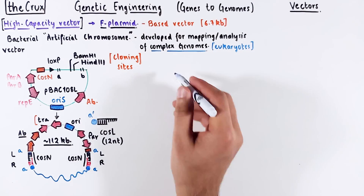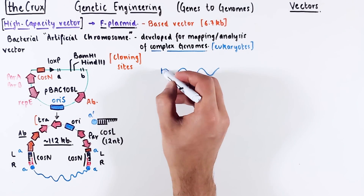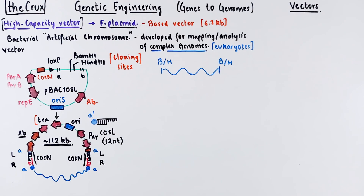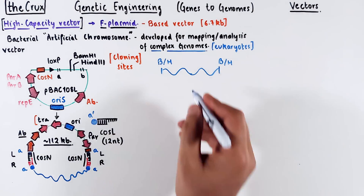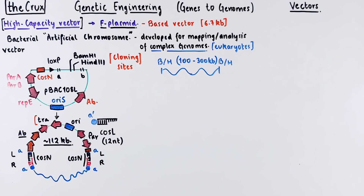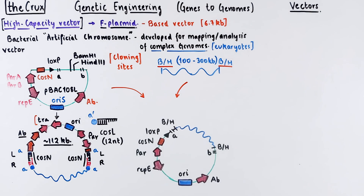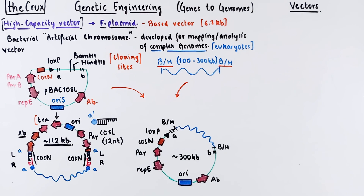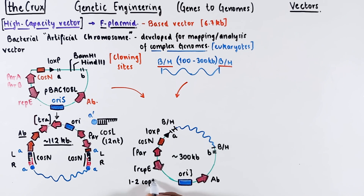The idea is similar to the mini-F plasmid. You take genomic fragments digested with BamHI or HindIII — these fragments could be as large as 300 KB. Depending on the restriction enzyme chosen, the vector is opened with that same enzyme, and you combine the two, resulting in a larger circular plasmid of around 300 KB if the insert is that large. The TRA genes seen in the mini-F plasmid are missing, but it has all the others, which means it cannot conjugate but can propagate at the same low copy number.